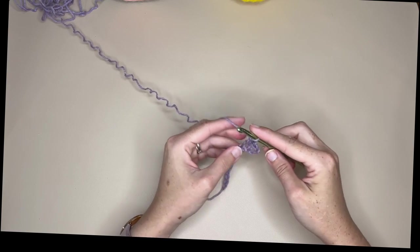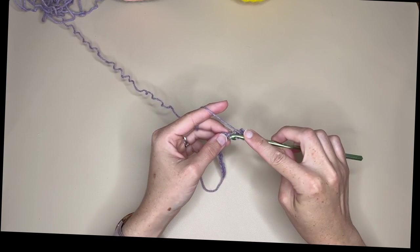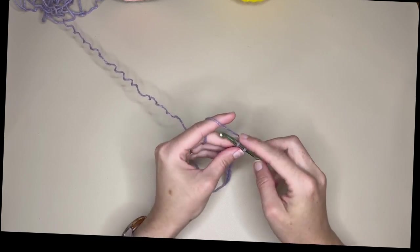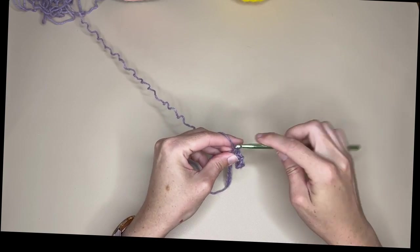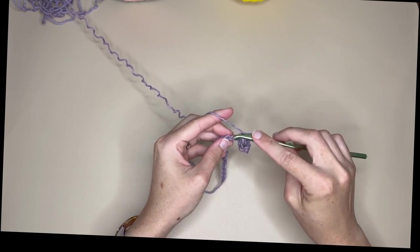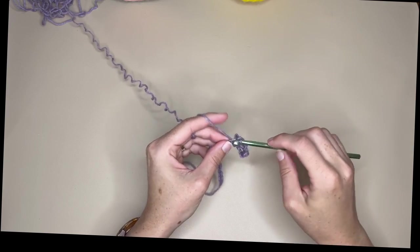Chain one, skip a chain, single crochet, chain one, and we're going to keep going until we've reached the end of the row.